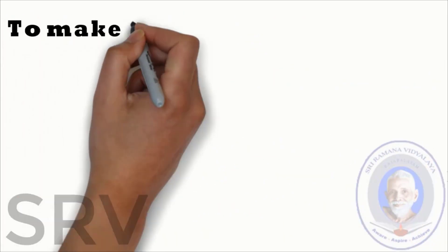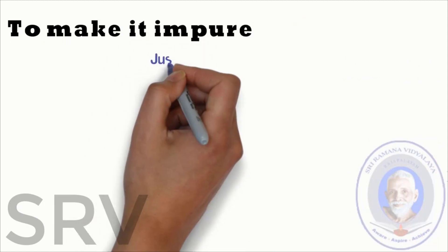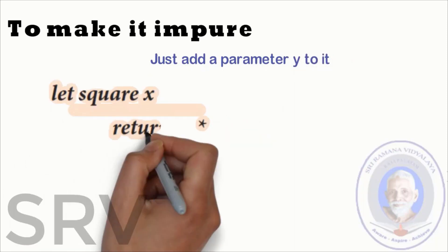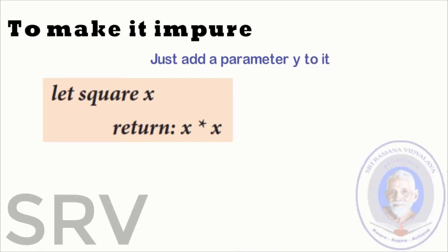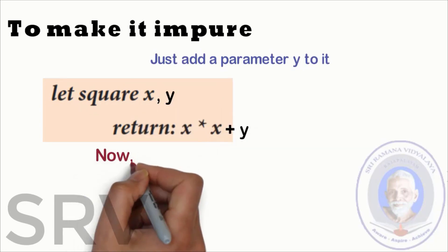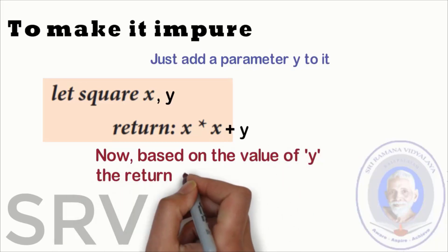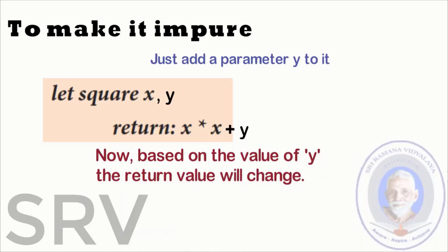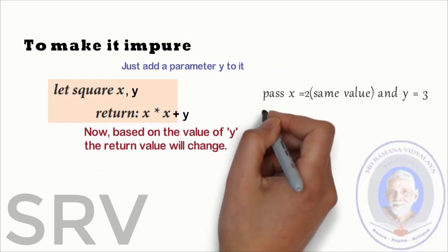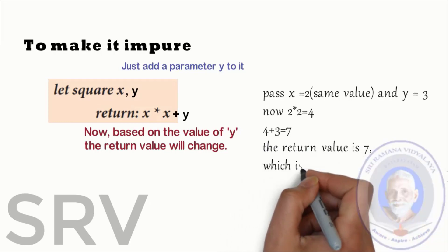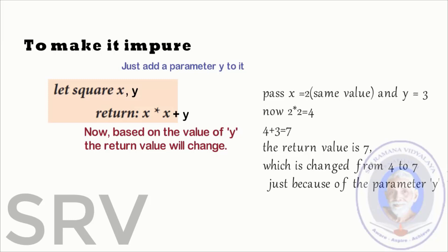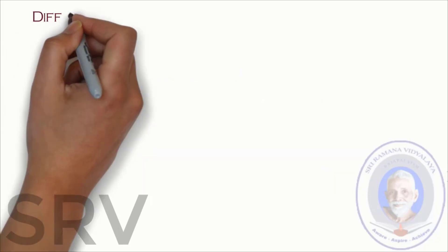To make the function as impure function just add a parameter y to it. The function definition is this. To this function definition we are adding a y parameter. Now based on the value of y the return value will change. As x into x plus y, y value is added so it will get changed. Now just see the values x is equal to 2 is passed and y is equal to 3 is passed. Now the return value is 7 which is changed from 4 to 7. Just because of the parameter y.